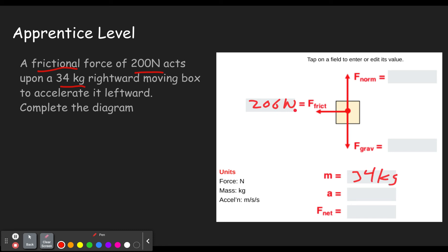We can get the force of gravity because the force of gravity is the weight, and that is the mass times the acceleration due to gravity. I'm not going to show all my work here because we're doing several different equations. We plug in 34 for mass and 9.8 for g — and you may not use 10, it will count that as wrong. So be sure you've got a calculator handy. That gives us 333.2 newtons.